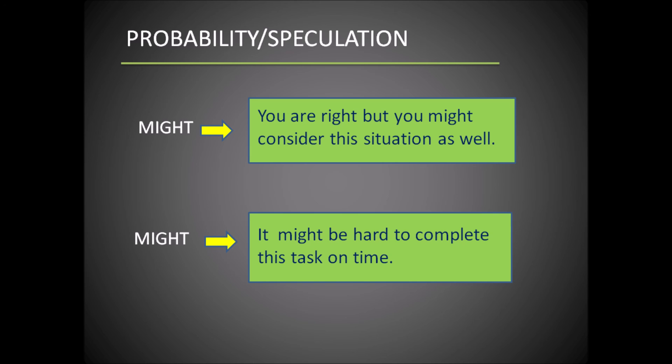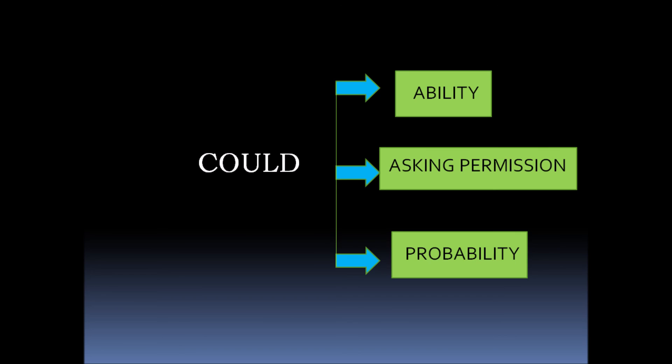One important point to remember: the modal verb 'could' can be used in many categories. It can showcase the ability of a person, it can be used to ask permission, and it can also determine the probability of an event happening. It all depends on the usage of the modal verb in a sentence and the mood of the speaker. This sums up our discussion on modal verbs. If you like the content, don't forget to subscribe to the channel — see you in the next video.